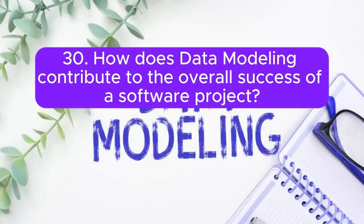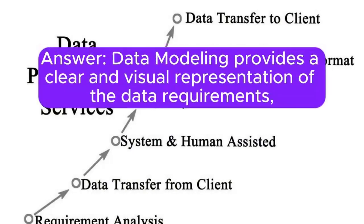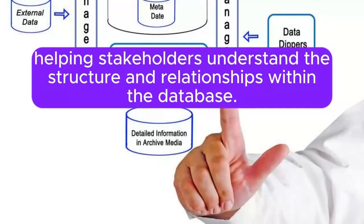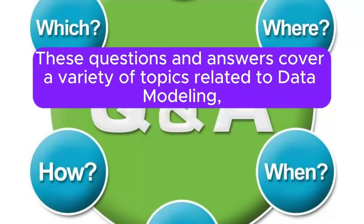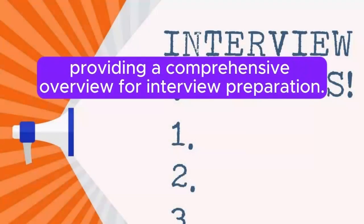30. How does data modeling contribute to the overall success of a software project? Answer: Data modeling provides a clear and visual representation of the data requirements, helping stakeholders understand the structure and relationships within the database. It guides database design, ensures data integrity, and facilitates communication between developers, analysts, and business stakeholders. These questions and answers cover a variety of topics related to data modeling, providing a comprehensive overview for interview preparation.